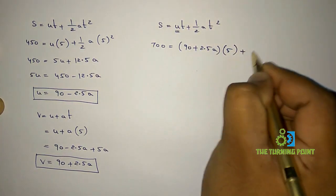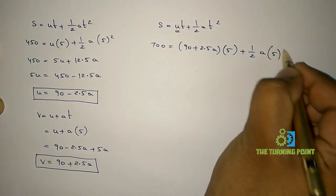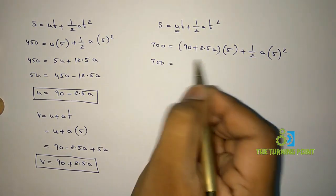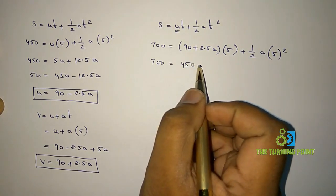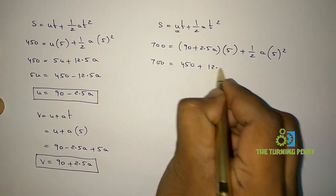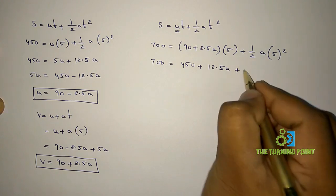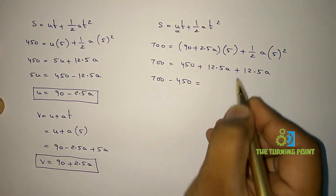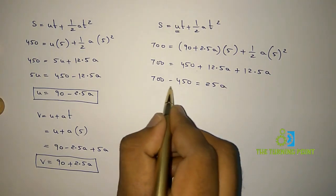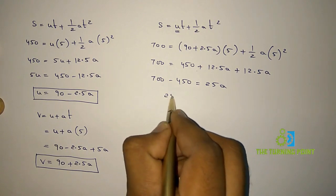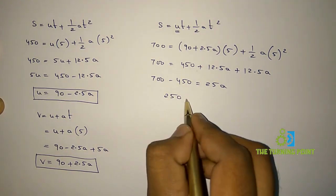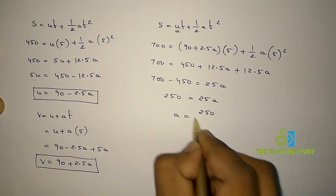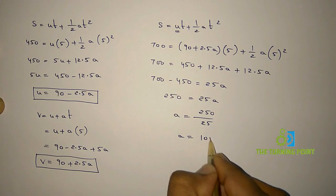So: 700 = (90 + 2.5a)×5 + ½×a×5², which gives 700 = 450 + 12.5a + 12.5a. Therefore 700 − 450 = 25a, so 250 = 25a, giving acceleration a = 250 ÷ 25 = 10 meters per second squared.